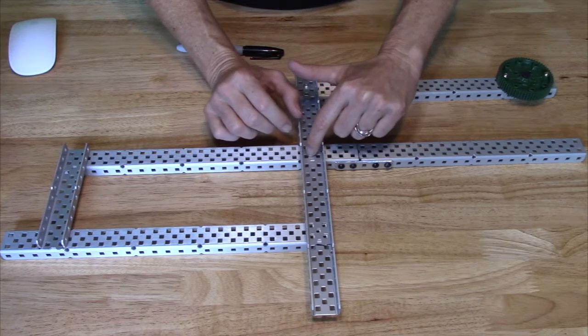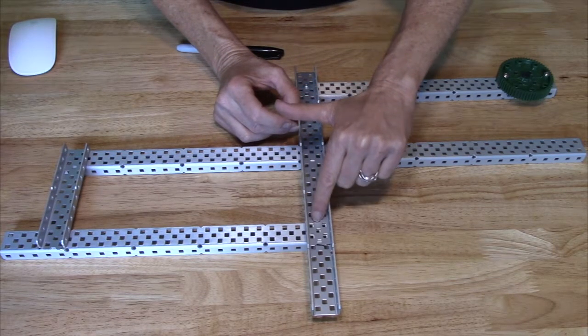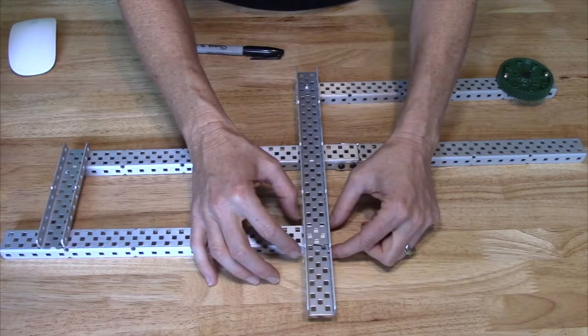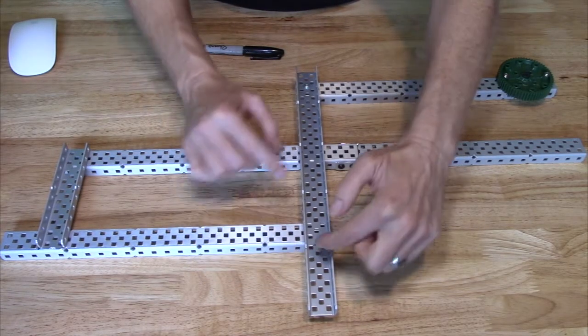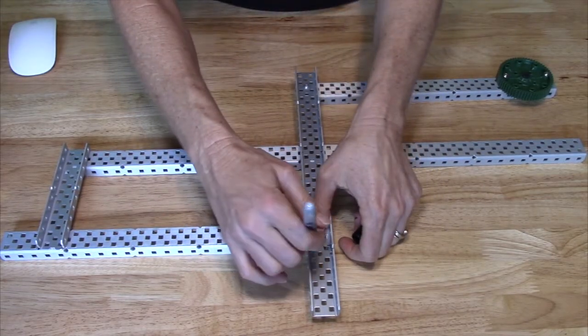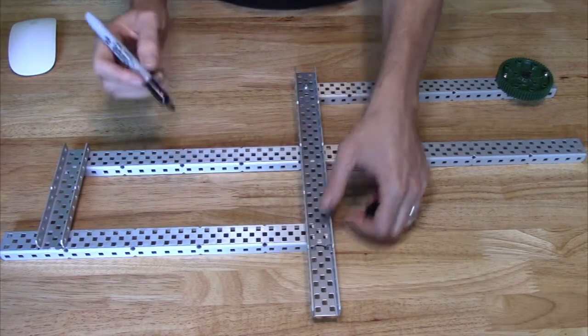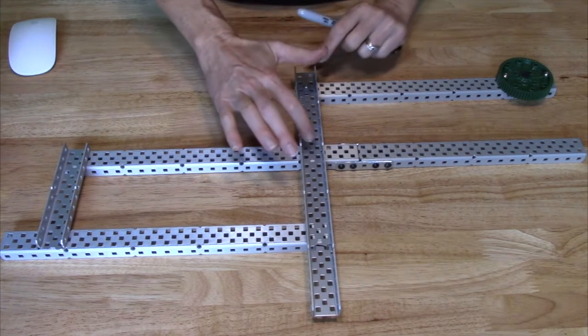I come over here. I want to make sure this also has nine holes between. One, two, three, four, five, six, seven, eight, nine. Perfect. Okay. So I line those up and it looks like I have some extra metal right here. So I'm just going to take my marker and I'm going to make a mark where I can make some cuts to cut off that metal.